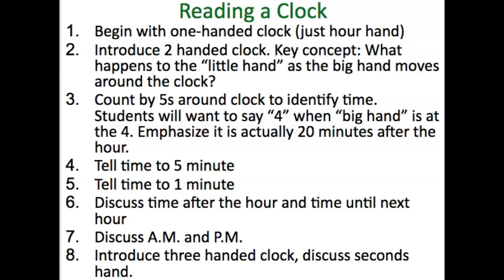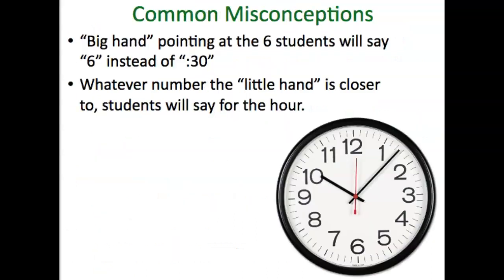So be aware of the relationship between units of measurement in time and common misconceptions. When the minute hand is pointing at the 6, children want to say 6 instead of 30. They also make the mistake of saying whatever number the shorter hand — the hour hand — is closer to. They have to remember that if it's between 10 and 11, it needs to pull back to the 10, not round up to 11 like rounding. That takes a lot of practice for kids.